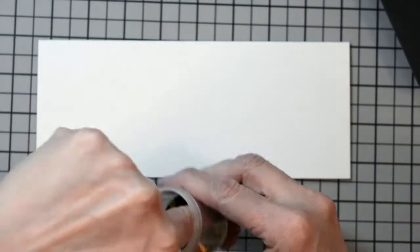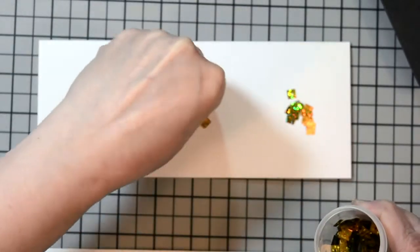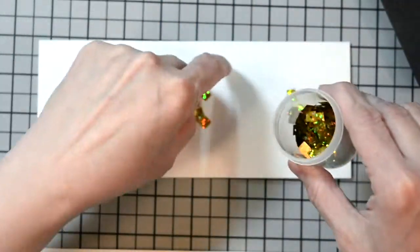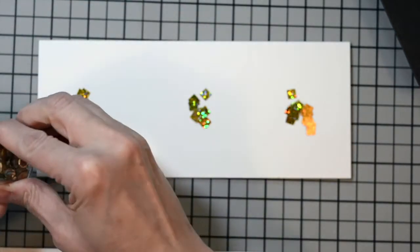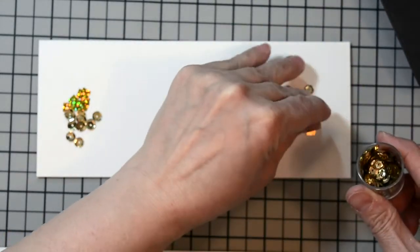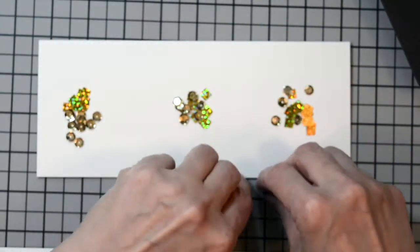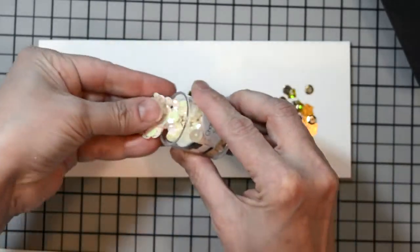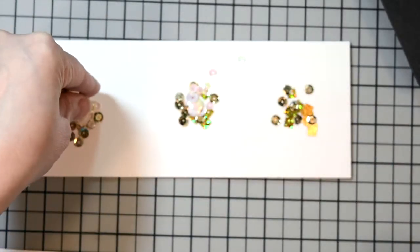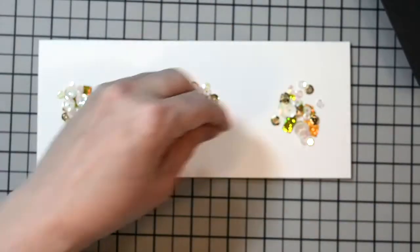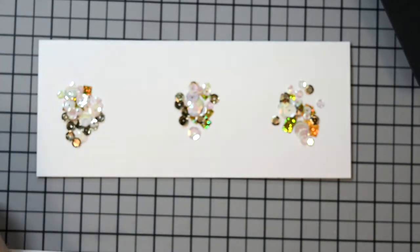So, now I'm going to grab some sequins and I'm going to put in some gold sequins and some white sequins or pearlescent, I should say. They're more pearlescent. These are gold holographic squares. And I have some round gold pieces as well. So, I'm making three little piles to fit within our three little windows. And you can put as much or as little sequins as you'd like. I want a nice amount but not too much where they can't shake around.